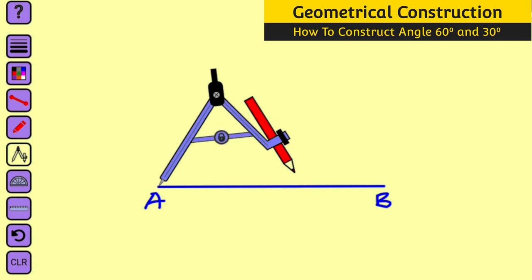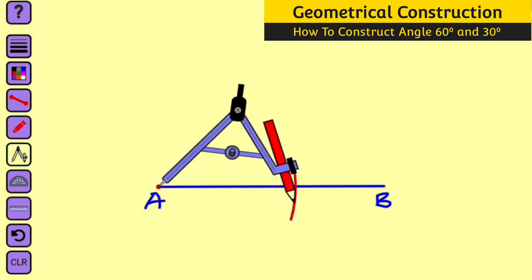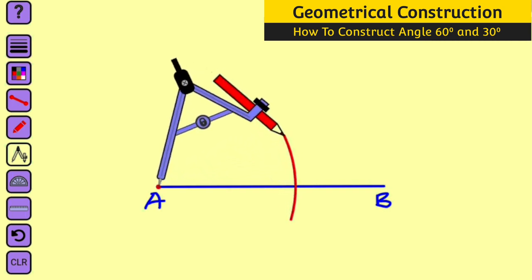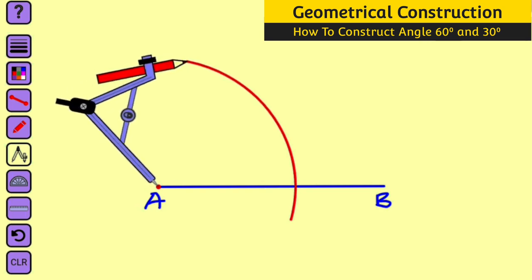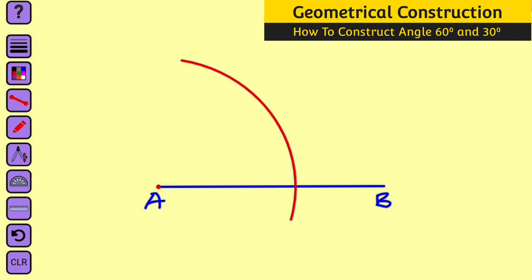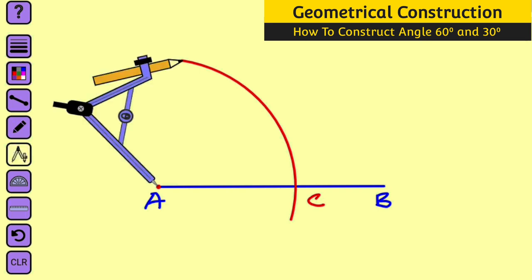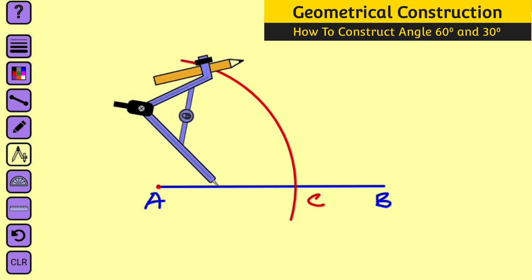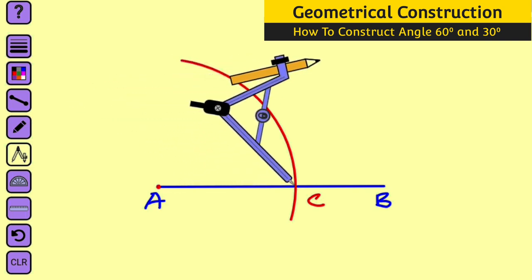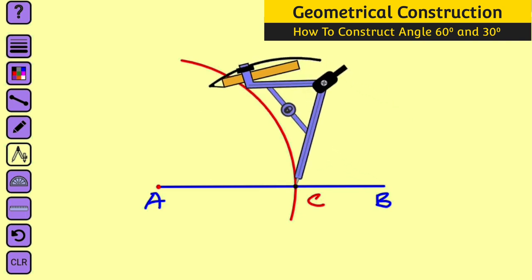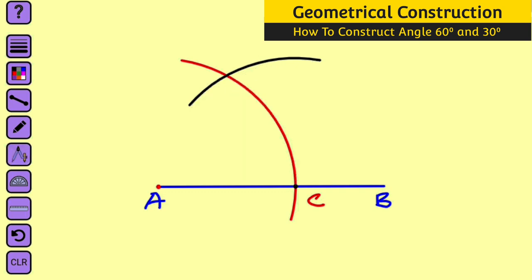Construct an arc to cut line AB — it has been cut. Extend it to the top, almost halfway to point A. Take away your compass and label the point of intersection as C. Now bring back your compass, take the pointer to the point of intersection C, and with the same radius — do not extend it — cut this initial arc. Remove the compass and name the point of intersection as D.